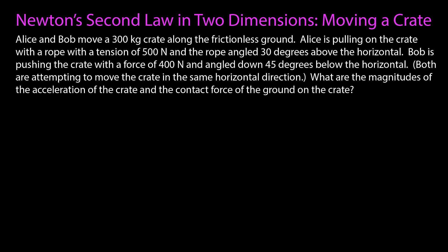In this video, I do an example of Newton's second law in two dimensions. Alice and Bob are moving a 300 kg crate. The ground is frictionless. Alice is pulling on the crate with 500 N at an angle 30 degrees above the horizontal. Bob is pushing the crate with 400 N angled down 45 degrees below the horizontal, though they are both attempting to move the crate in the same direction. What are the magnitudes of the acceleration of the crate and the contact force of the ground on the crate?